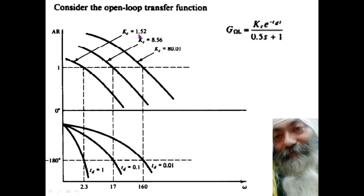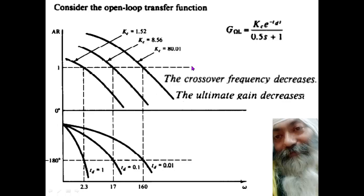It means with lesser gain, the system will be sluggish. So not only will the system be sluggish, system will also be sensitive to all kinds of disturbances. So this is the crux of the thing: in case the delay increases, the crossover frequency decreases and ultimate gain also decreases.